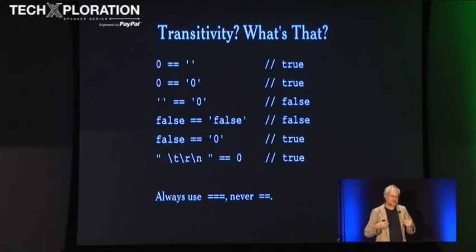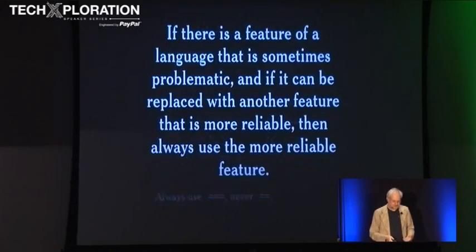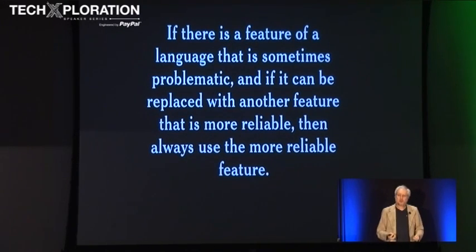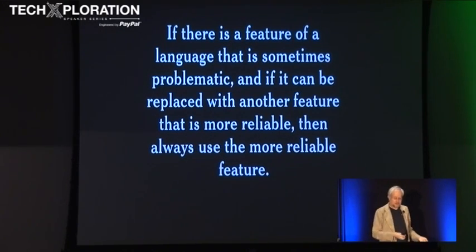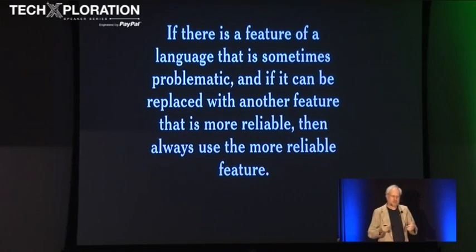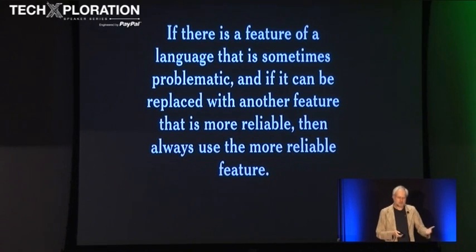Even in cases where double equal accidentally does exactly what you want, don't use it even then, because the reader of your program is going to have to ask: did he find the one case where it actually does the right thing, or is it an error? You don't want people asking those questions when they're reading your program. If there's a feature of the language that is sometimes problematic and can be replaced by another feature that is more reliable, always use the more reliable feature — good trade-off, no cost, clear benefit.